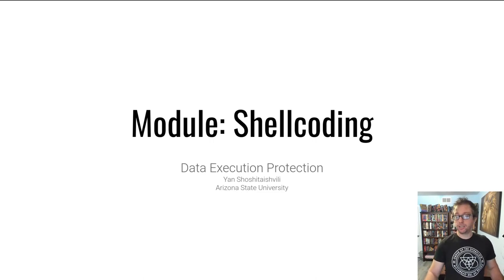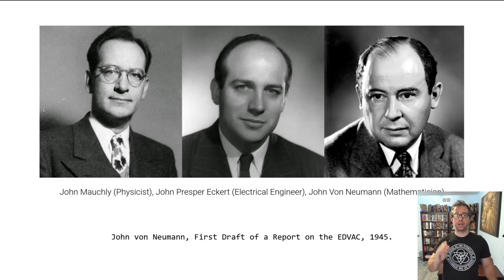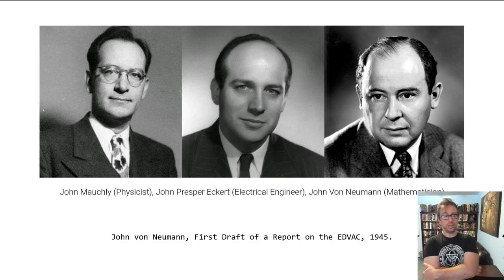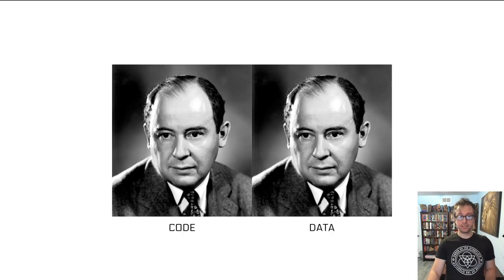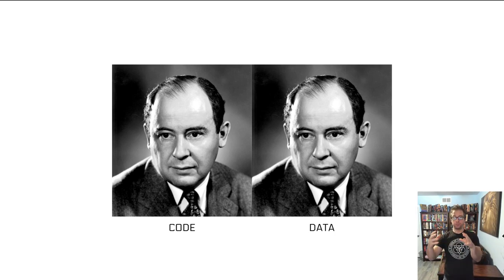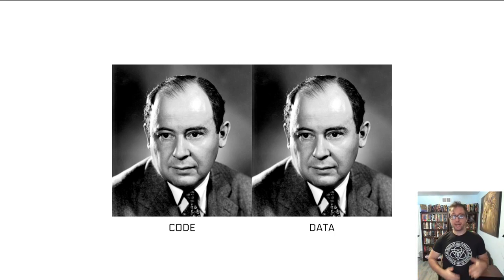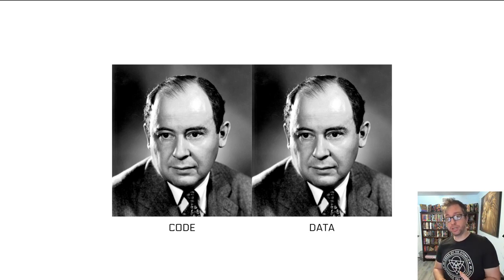If you remember the Three Johns from our computer architecture fundamentals, the Three Johns gave us what is now called the John von Neumann architecture. They proposed this architecture that basically treats code and data in the same way — they're all stored in memory, they're all read into your CPU cache, and so forth. And this causes problems. As we have seen throughout this module, this allows us to inject data as if it were code and have it executed.